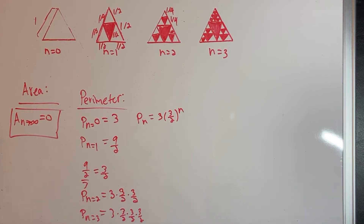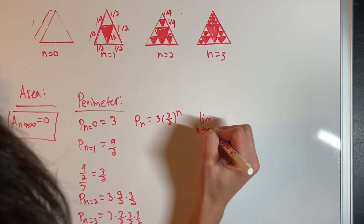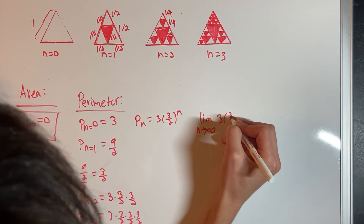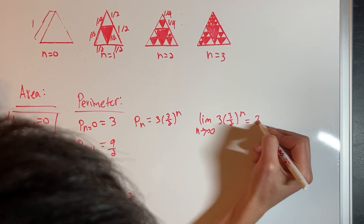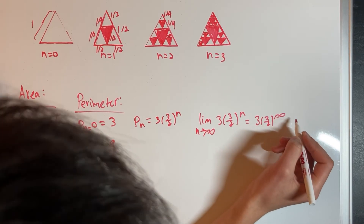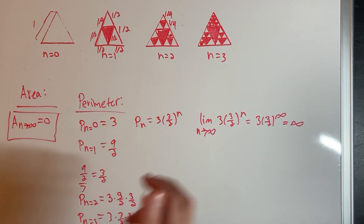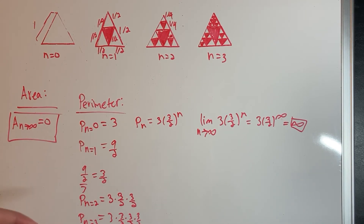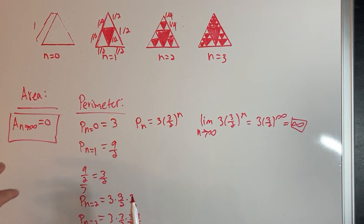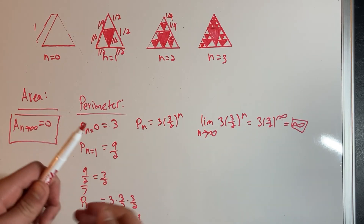Once again, we can take a limit: the limit as n approaches infinity of three times three-halves to the n power equals three times three-halves to infinity, and that is equal to infinity. So the perimeter of a Sierpinski Triangle is infinity. That's very mathematically interesting, because you have a geometrical figure with zero area yet an infinite perimeter — and that's just something that's very mathematically interesting.